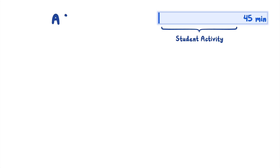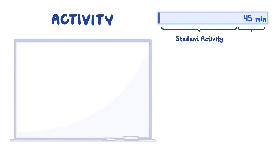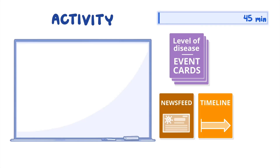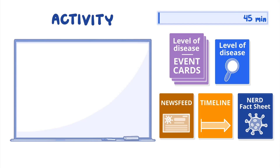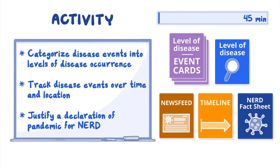In this 35-minute activity and 10-minute class discussion, students start by using disease event data to categorize the events into levels of disease occurrence. Then they will track novel emerging respiratory disease, or NERD, events over time and location. They will determine the point in time that NERD should be declared a pandemic and justify their decision.